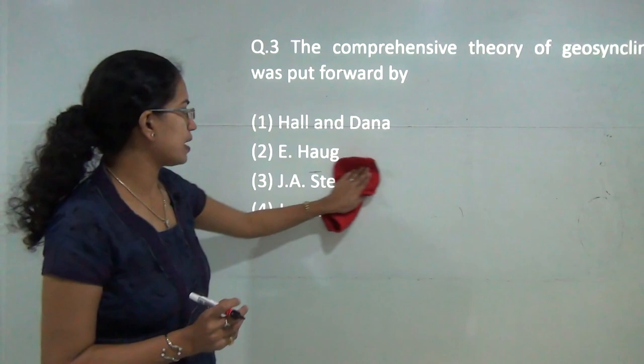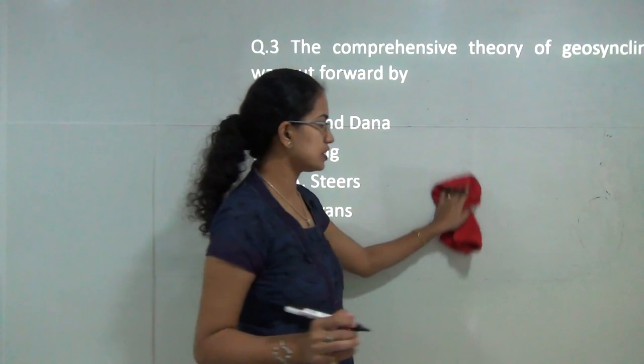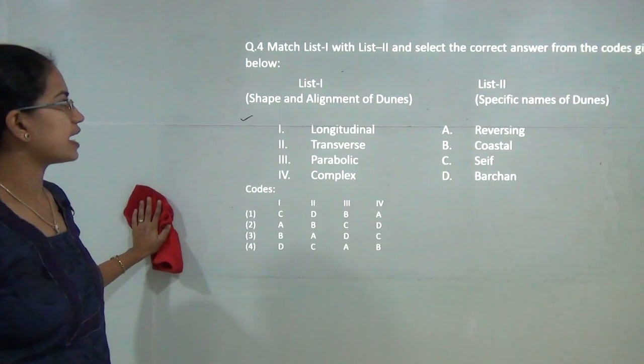The next is comprehensive theory of geosynclines was put forward by Hall and Dana. We have covered this in our lecture where we have talked about geosynclines and the various theories related to origin of geosynclines in detail. You can refer that.